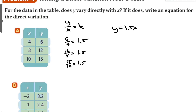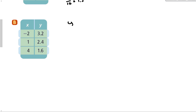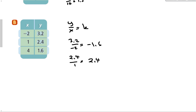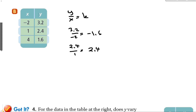For part b, check each data point ratio. 3.2 over negative 2 equals negative 1.6. Already we can see a problem: 2.4 over 1 is 2.4, and 1.6 over 4 is also something different. Since the ratios are not constant, this is not direct variation, and we cannot write a direct variation equation for it.